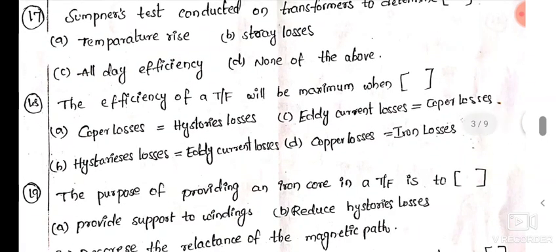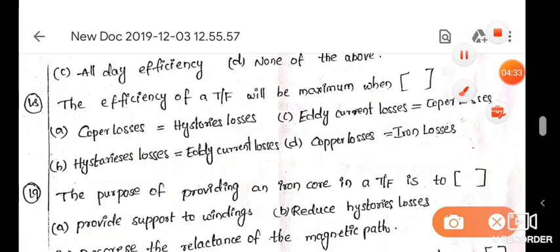The efficiency of a transformer will be maximum when copper losses is equal to iron losses. This is important bit. Copper losses is equal to iron losses, the efficiency will be very more. 18th bit.